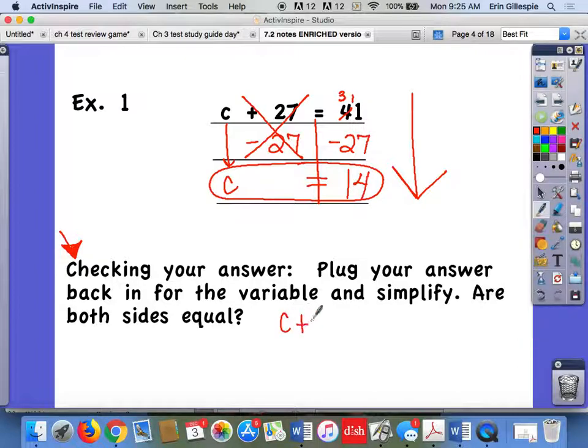So take your original equation, C plus 27 equals 41, and put that value that you just got for the variable in and see if it works. So does 14 plus 27, does it equal 41? Double check it. Well, yeah, it does. 14 plus 27, 4 plus 7 is 11, right? Carry 1, 1 plus 1 plus 2 is 41. So yep, it checks out. Our solution works. So that's how you can check your solution. You just put it back into the variable and make sure that both sides are equal.